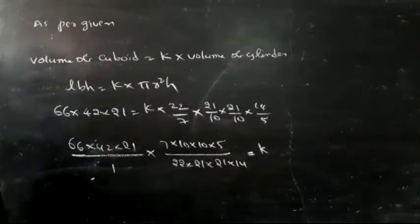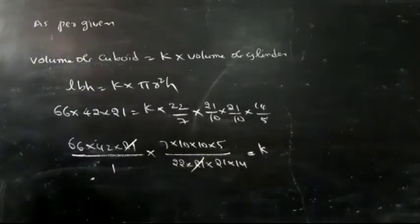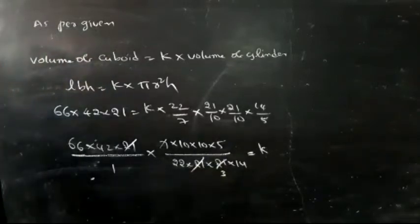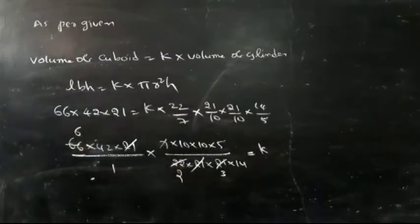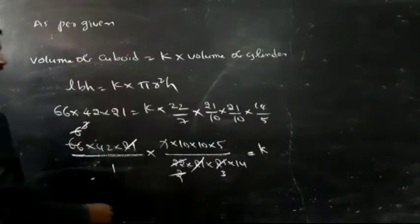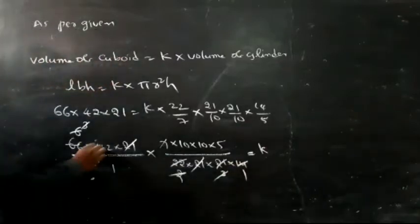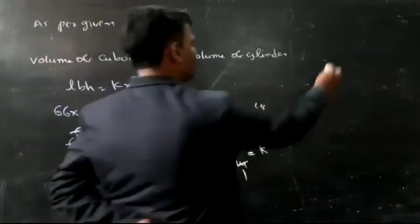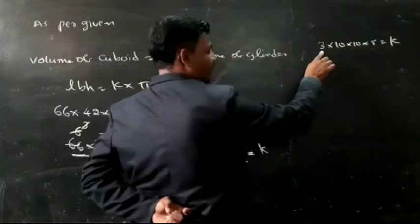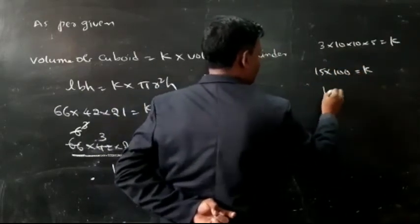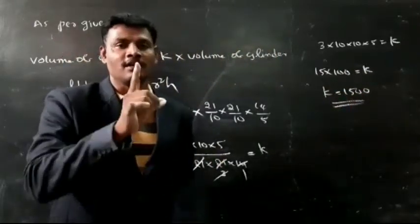After cancellations: 21 and 21 cancel, 7 and 7 cancel, 11 and 11 cancel, further 3 and 3 cancel, 14 and 14 cancel. The remaining expression is 3 into 10 into 10 into 5 equals k. That gives 15 into 100 equals k. So k equals 1500. They can prepare 1500 candles by using the wax.